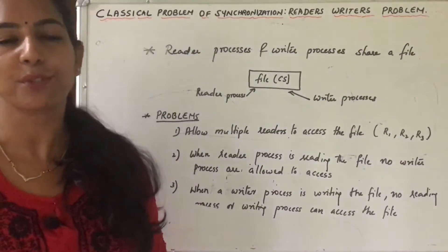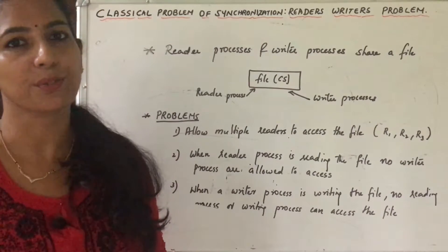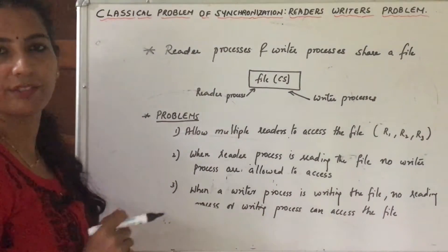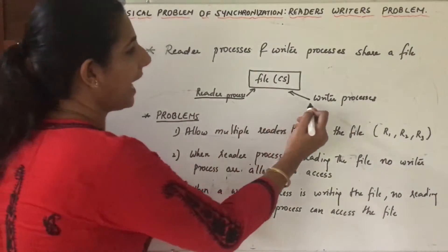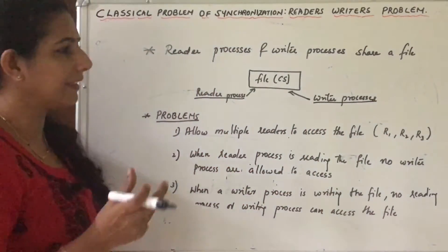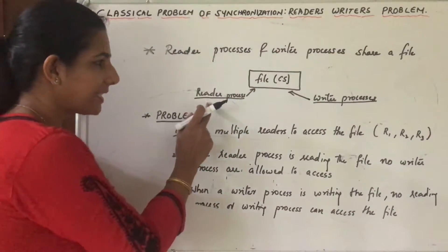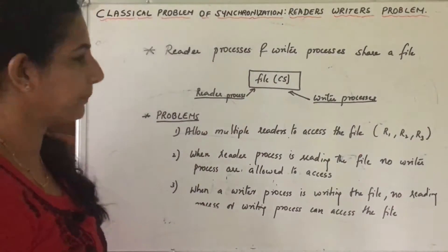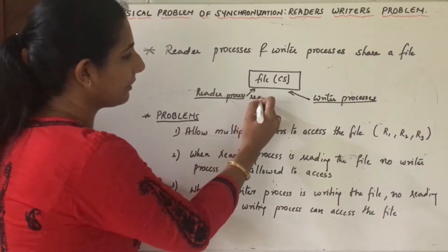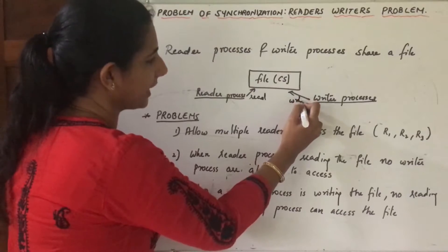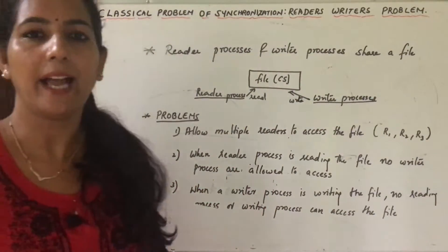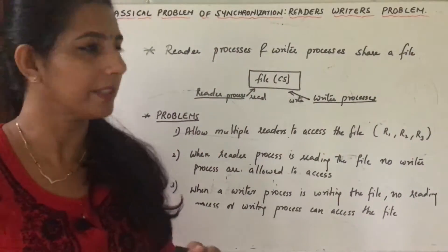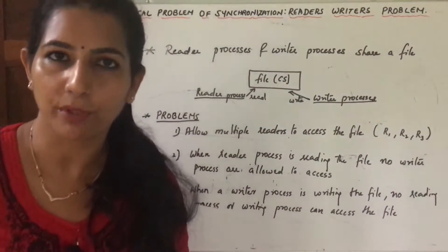In this session we are going to see one of the classical problems of synchronization, known as the Readers-Writers problem. In this concept we have two kinds of processes: reader processes and writer processes, who share a common file. When a read happens there is no modification to the content of the file, whereas when a write happens it reads the file and then makes modifications to it.